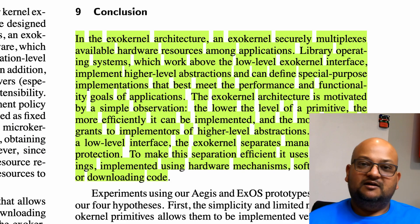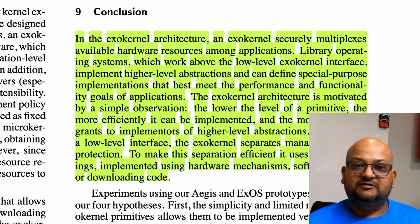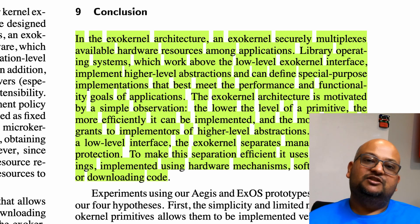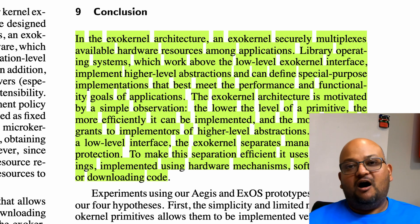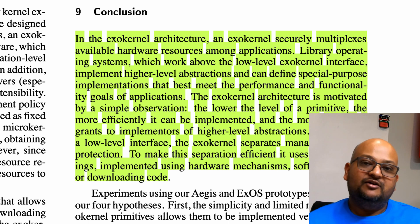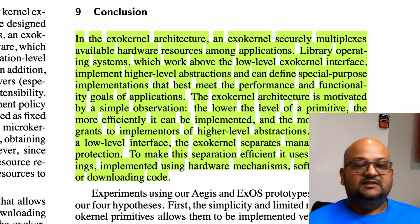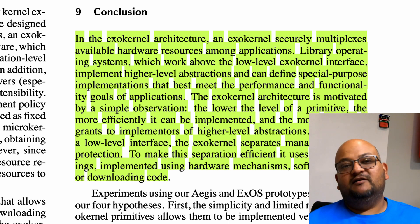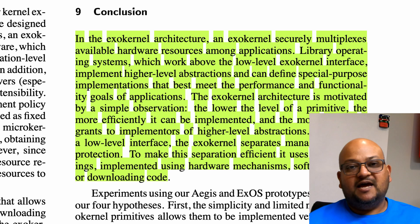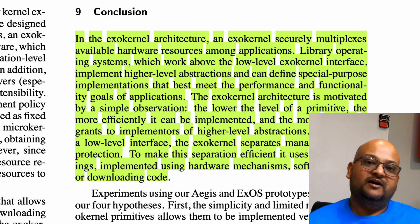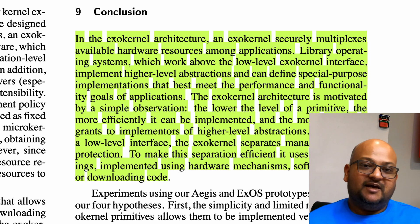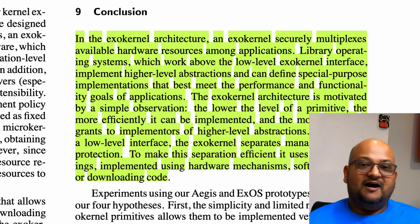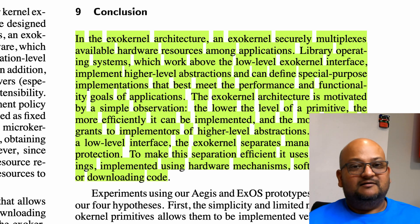So that was a quick look at the exokernel architecture, which argues that applications should not have to pay the performance cost of operating system abstractions that they do not use the full power and generality of. Instead, the kernel itself should be a very light layer that simply protects and exports slices of the underlying raw hardware, and the policies via which hardware is managed should be handled at the application layer. If you like these paper summaries, please leave a like, feel free to subscribe — I cover new papers every week. I hope you enjoyed that and I will see you next time.